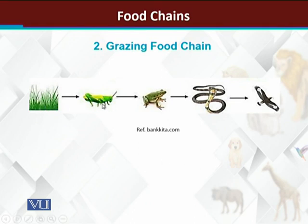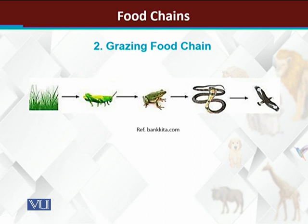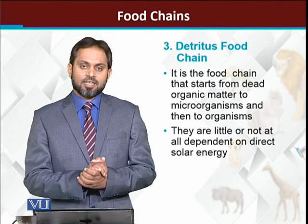In the grazing food chain diagram: grasses are eaten by insects, insects are eaten by the frog, frog is eaten by the snake, and snake is eaten by the hawk or some other bird. Energy travels from grasses to insects, then to frog, then to snake, and ultimately to the hawk. At each step, a lot of energy is also wasted as heat.